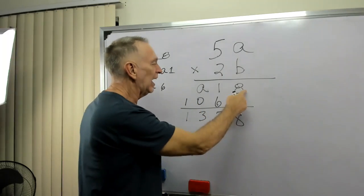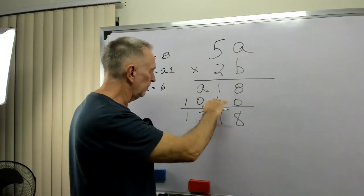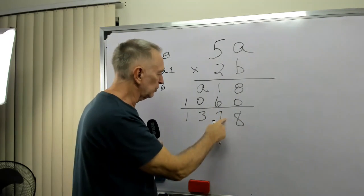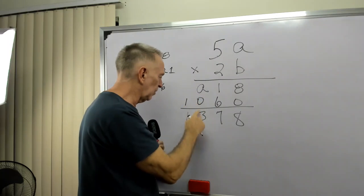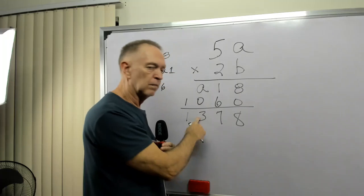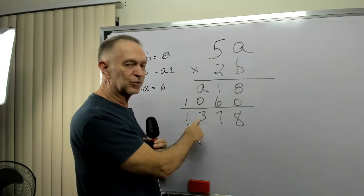Now, then, 8 plus 0 equals 8. No carry. 6 plus 1 equals 7. No carry. A plus 0 equals 3. Oh, what does that mean?